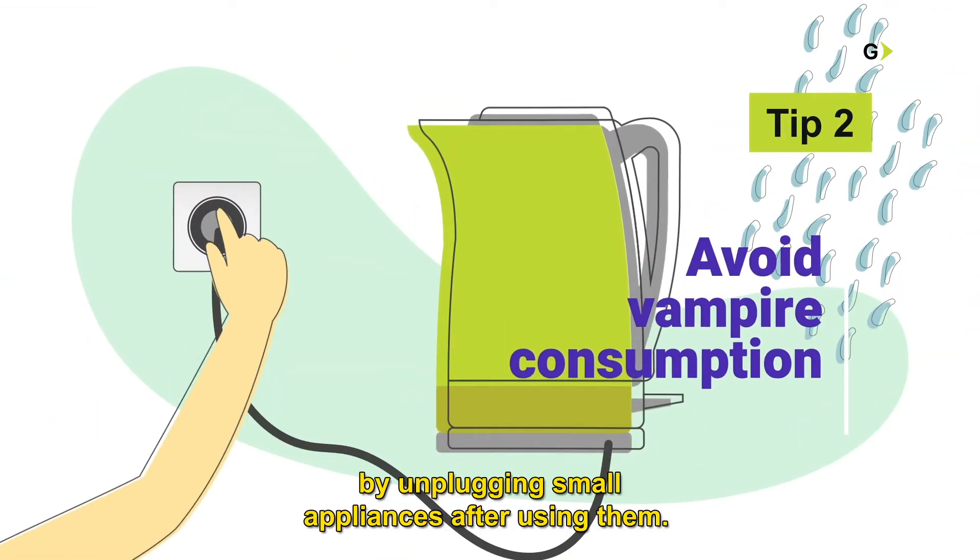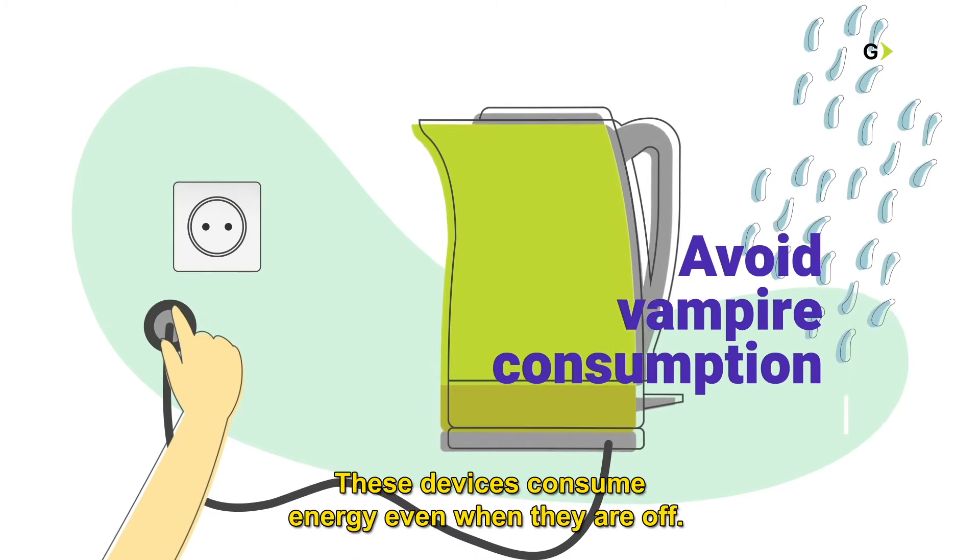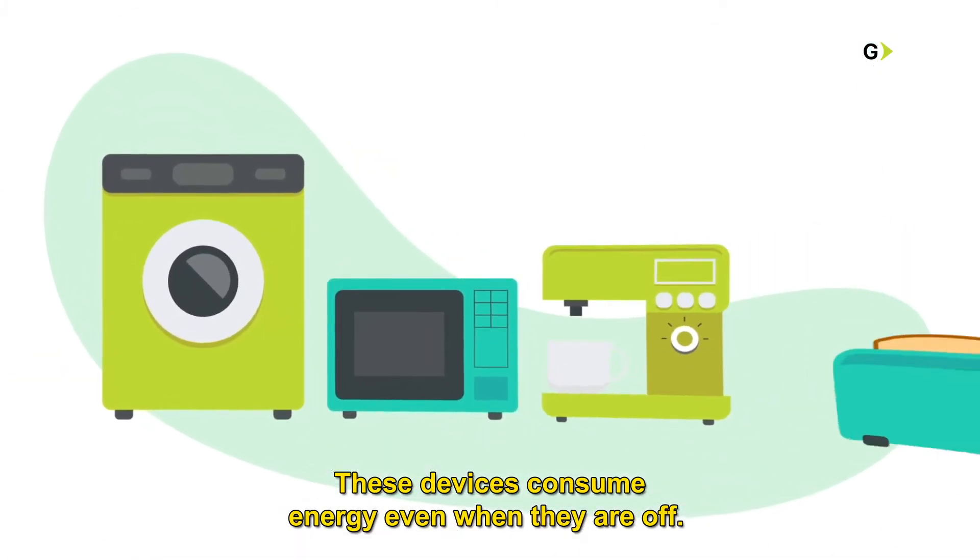Avoid vampire consumption by unplugging small appliances after using them. These devices consume energy even when they are off.